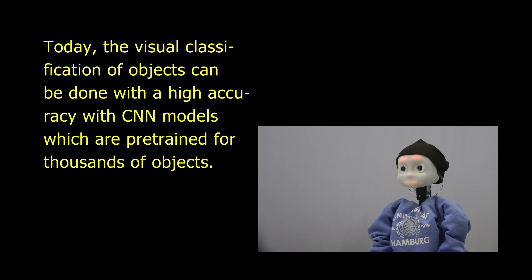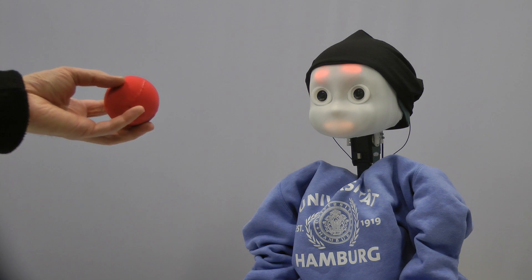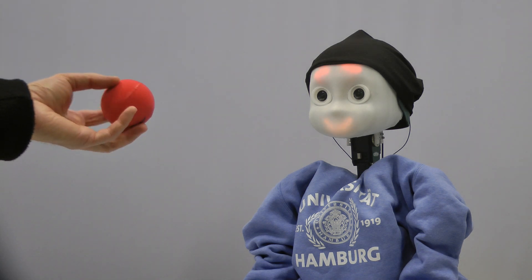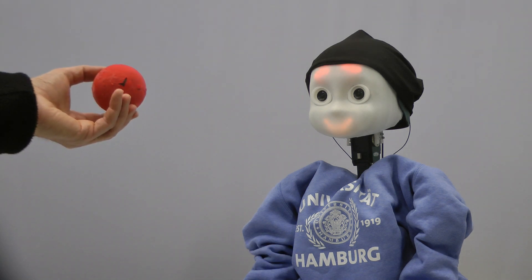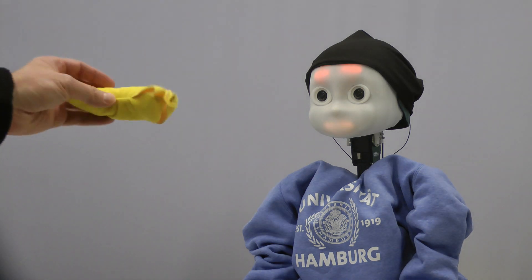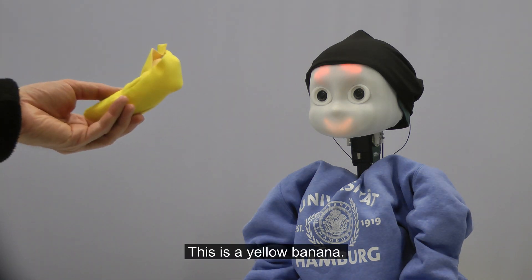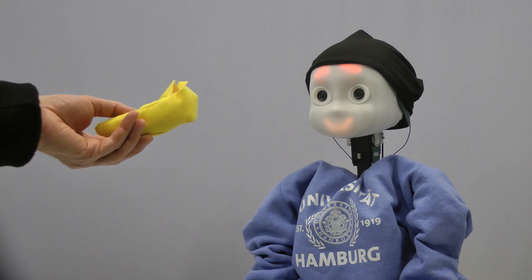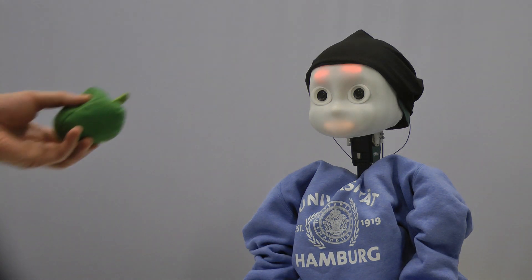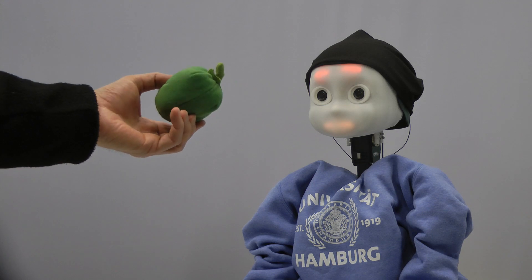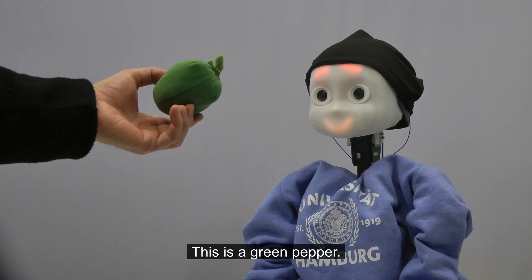Today, the visual classification of objects can be done with high accuracy with CNN models which are pre-trained for thousands of objects. This is a red ball. This is a yellow banana. This is a green pepper.